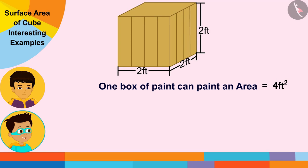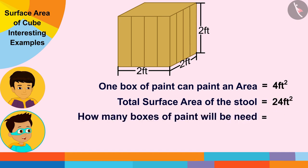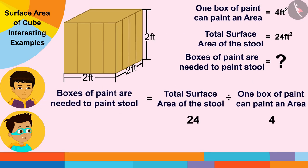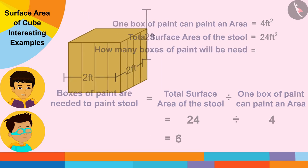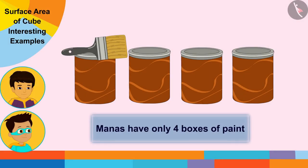Now, with one box of paint we can paint an area of four square feet. So if we have to paint the total surface area of the stool, that is 24 square feet, how many boxes of paint will we need? We have to divide the total surface area by four. So that gives us six boxes of paint needed to paint the stool.